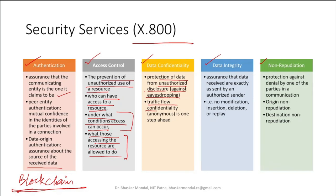Data confidentiality is the protection of data from unauthorized disclosure against eavesdropping. Traffic flow confidentiality goes one step further — an attacker may not read your message but can trace your packet across different routers on the network and find its final destination. To prevent this, packets must be anonymous so the attacker cannot identify whose packet it is.